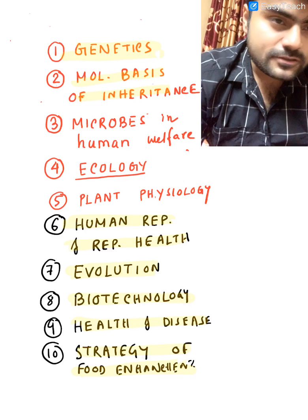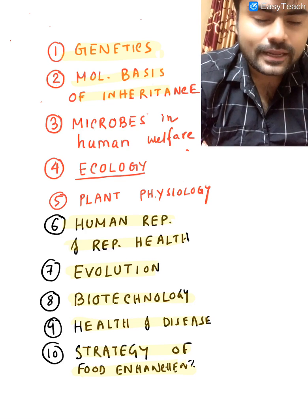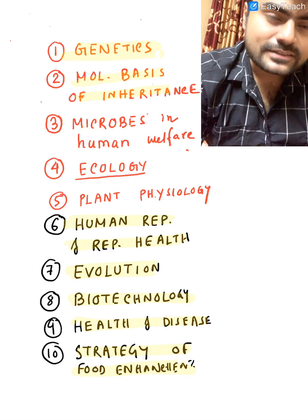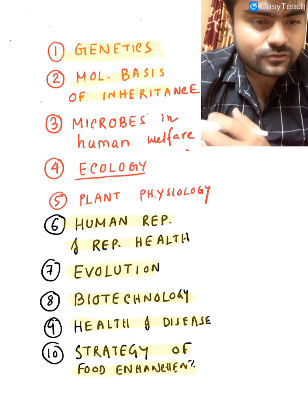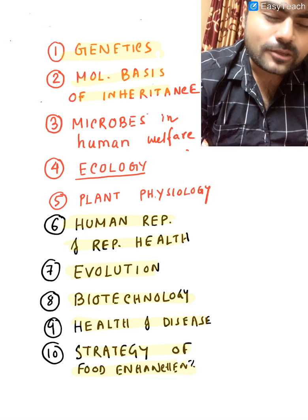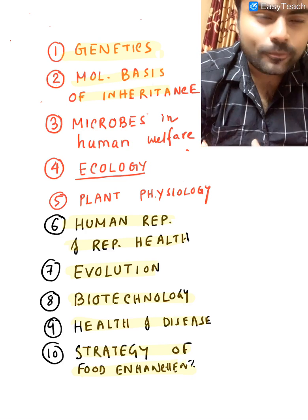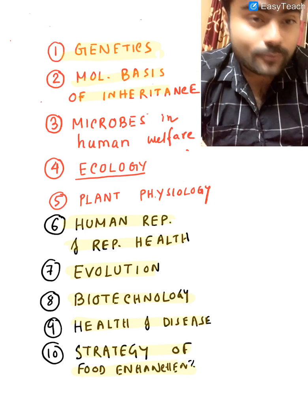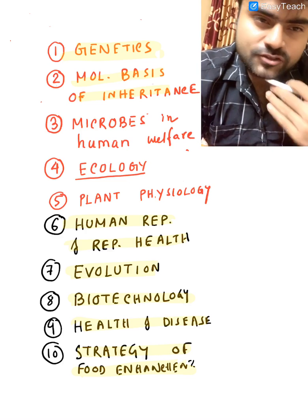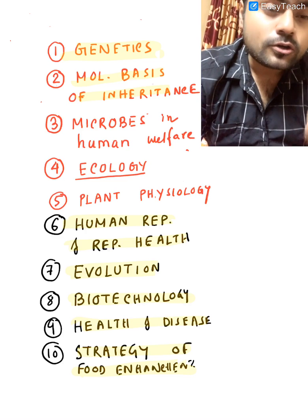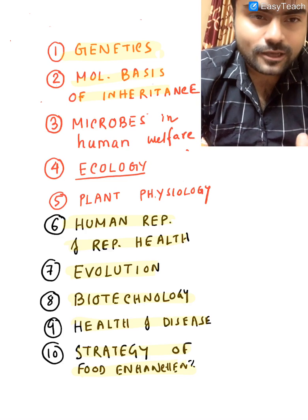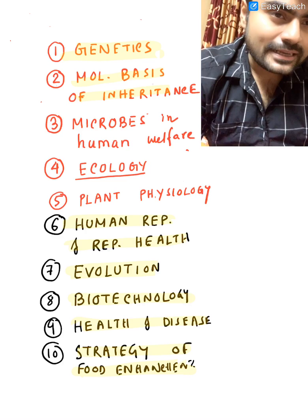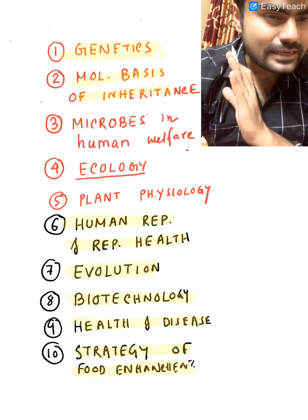Next, molecular basis of inheritance. This is also part of genetics — you have to know everything: the types of RNA, the leading strand and lagging strand in replication, the steps of transcription, the lac operon system, what transposons are — the jumping gene. Then you have to know about the human genome project and DNA fingerprinting. You have to know genetics and molecular basis of inheritance thoroughly.